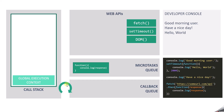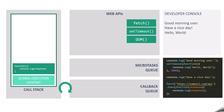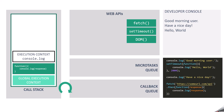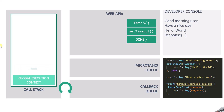Now the event loop will push the fetch callback from the microtask queue to the call stack when the call stack is empty. Since the call stack is currently empty, the event loop pushes the callback function to the call stack for execution. From this function, console.log is called, an execution context is created, it logs the response returned by the fetch API, and gets popped off the stack. The callback function also completes and is popped off the execution stack.